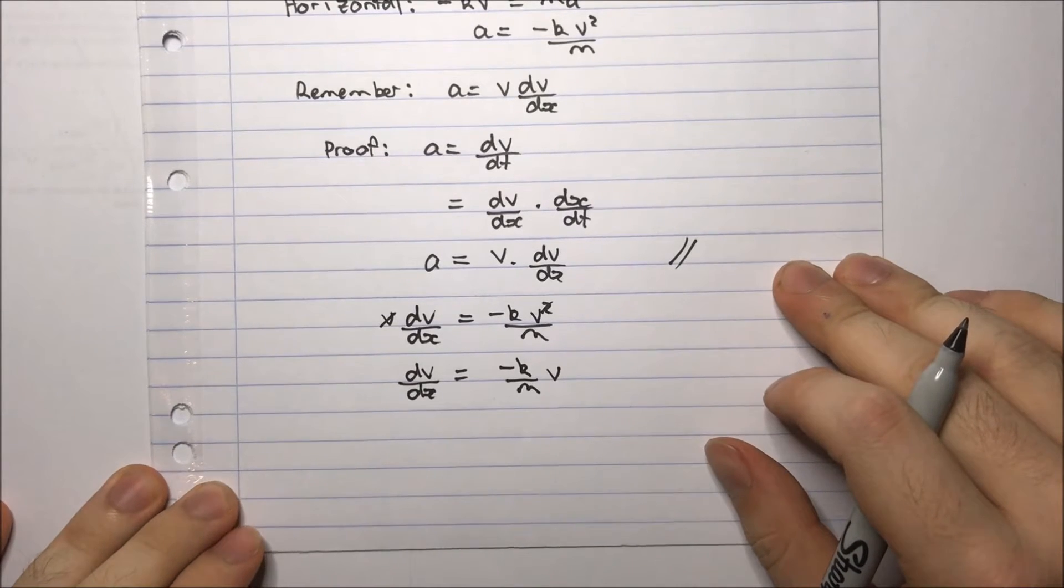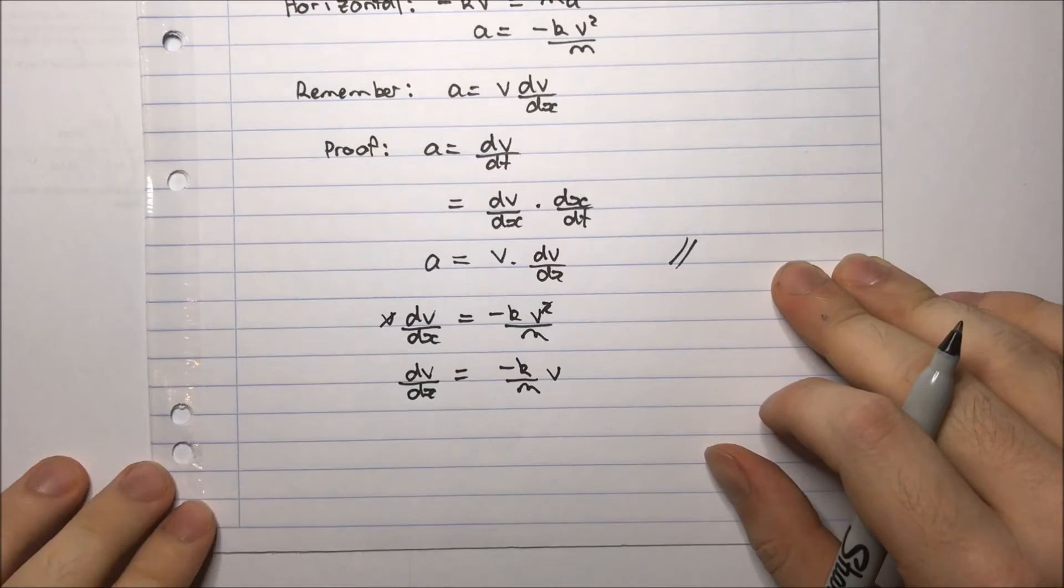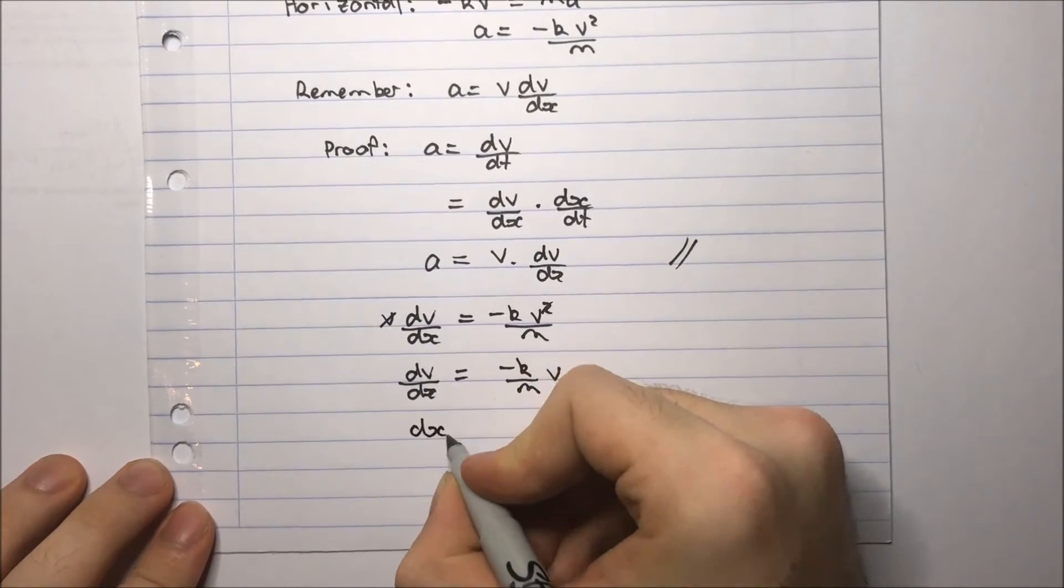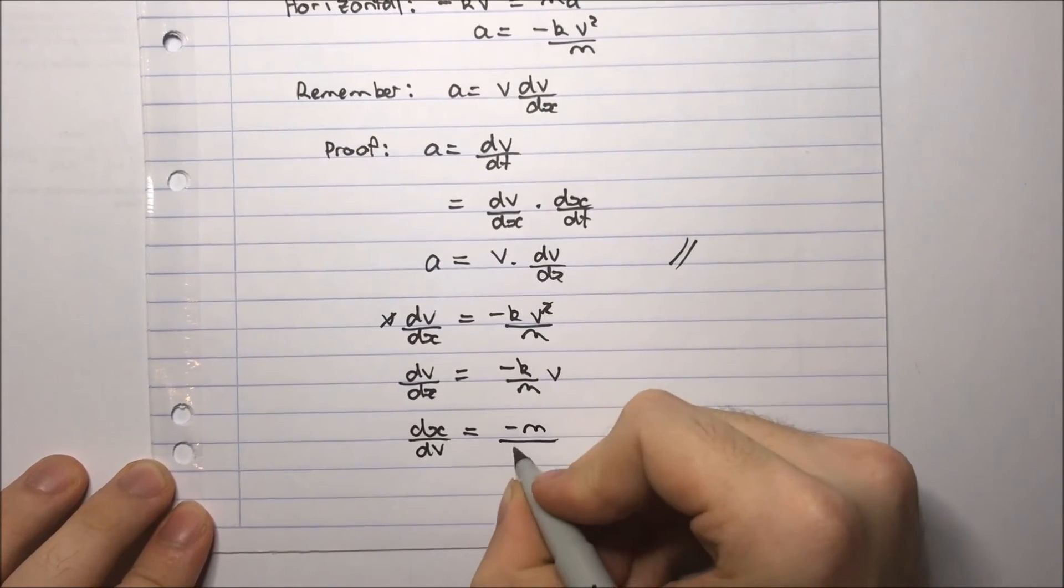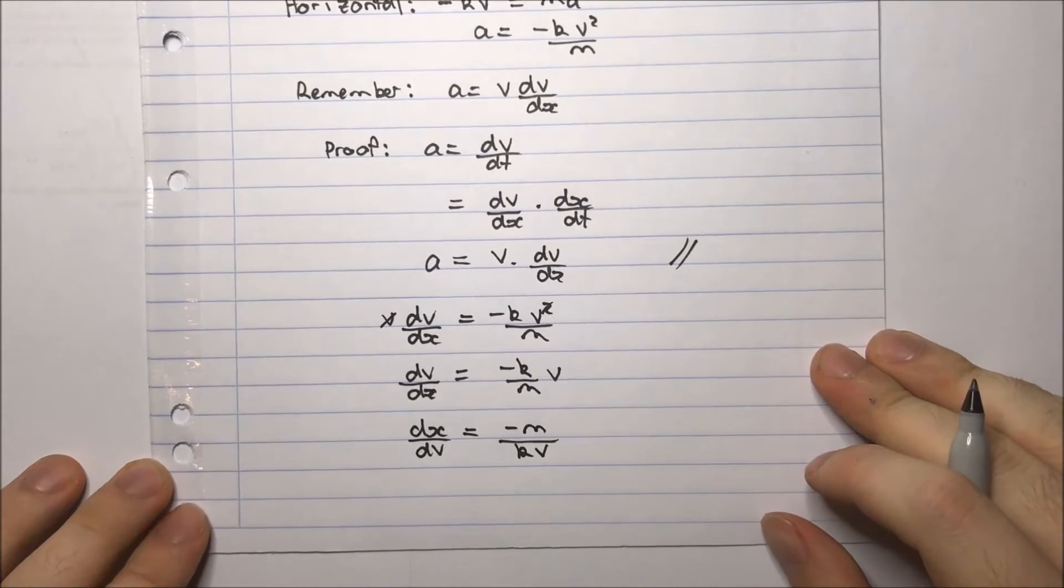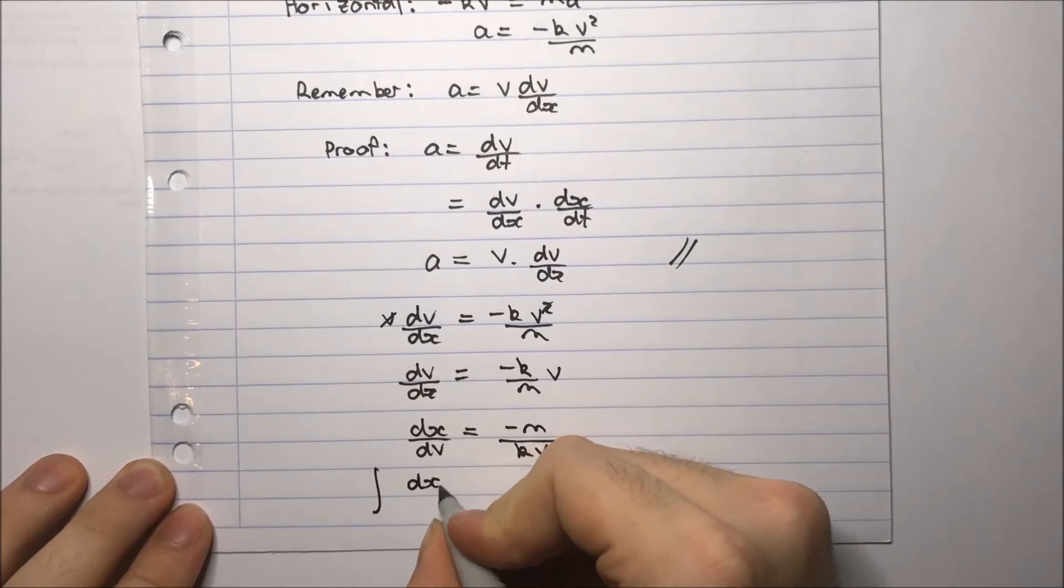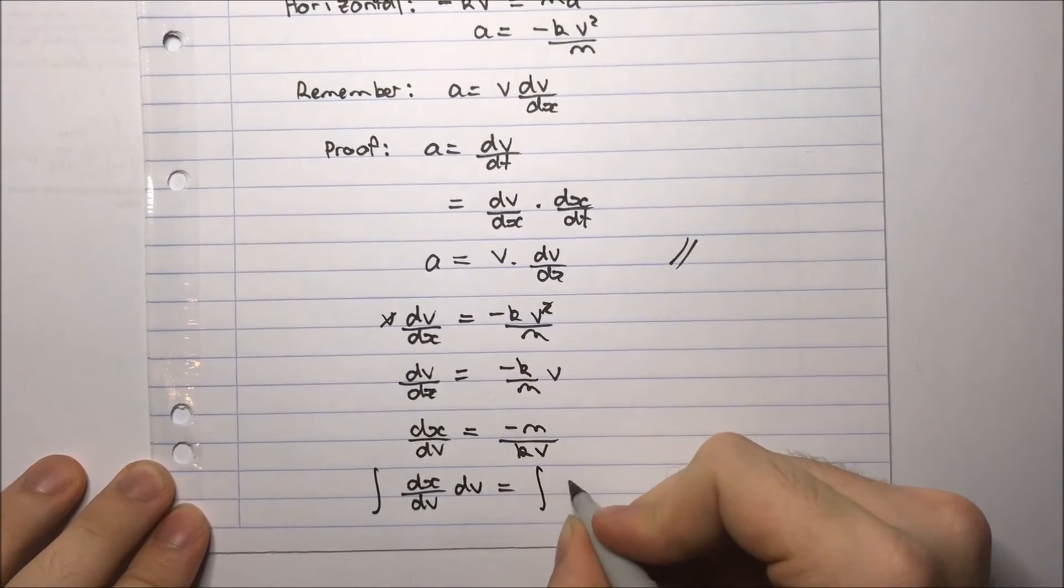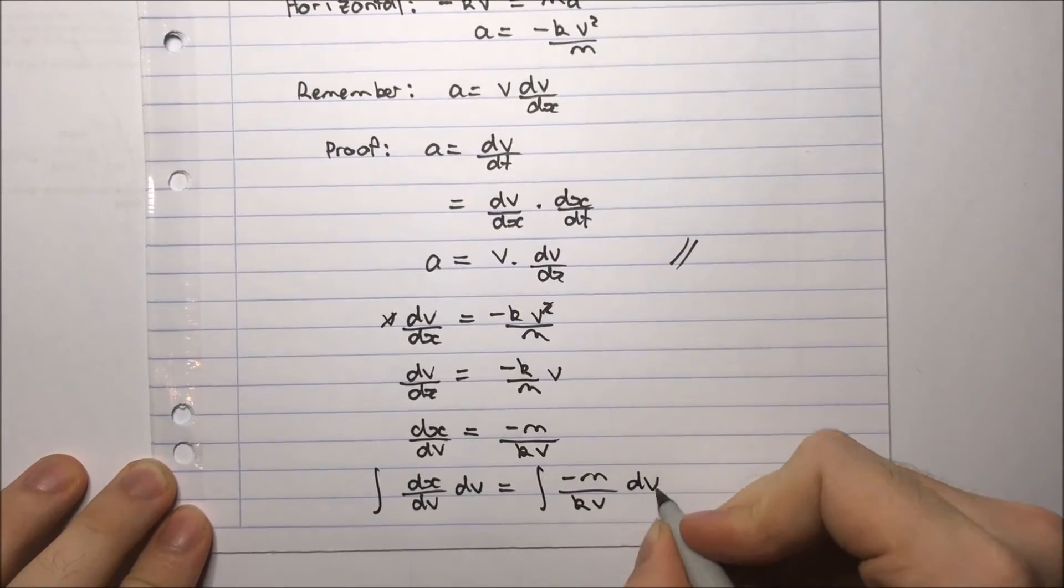And now I want to be able to have all v's on one side and all x's on one side. So I'm going to flip both sides of this equation. So I'll get dx/dv equals minus m over kv. And now I want to integrate both sides with respect to v.